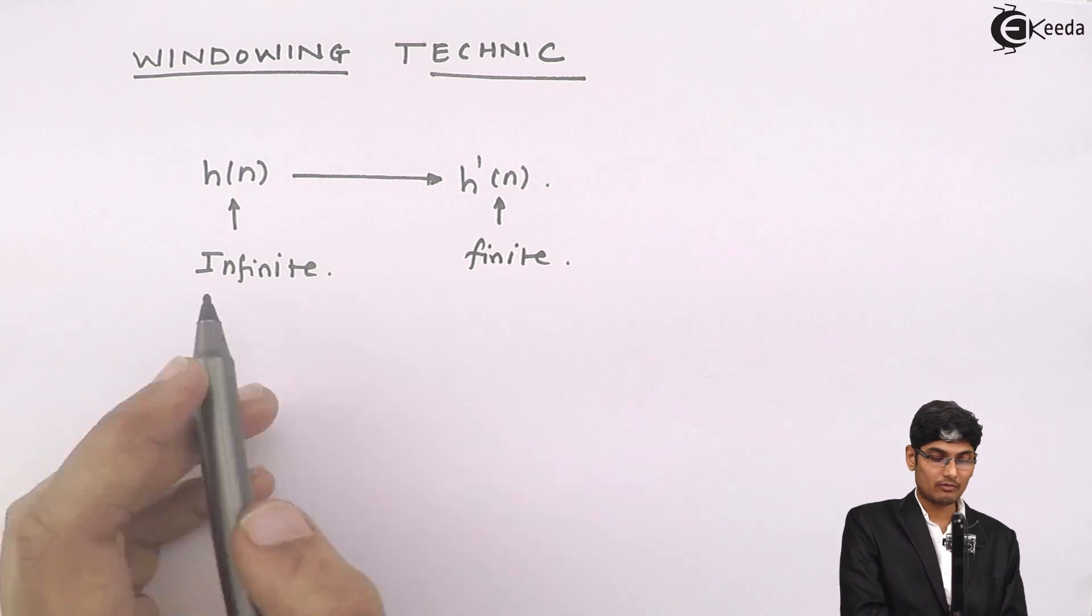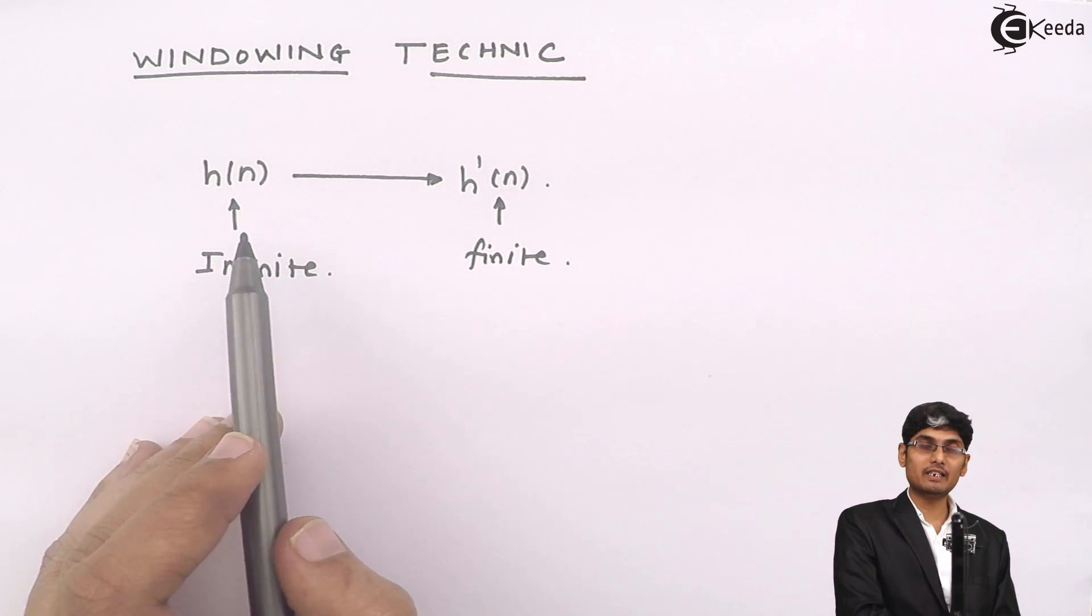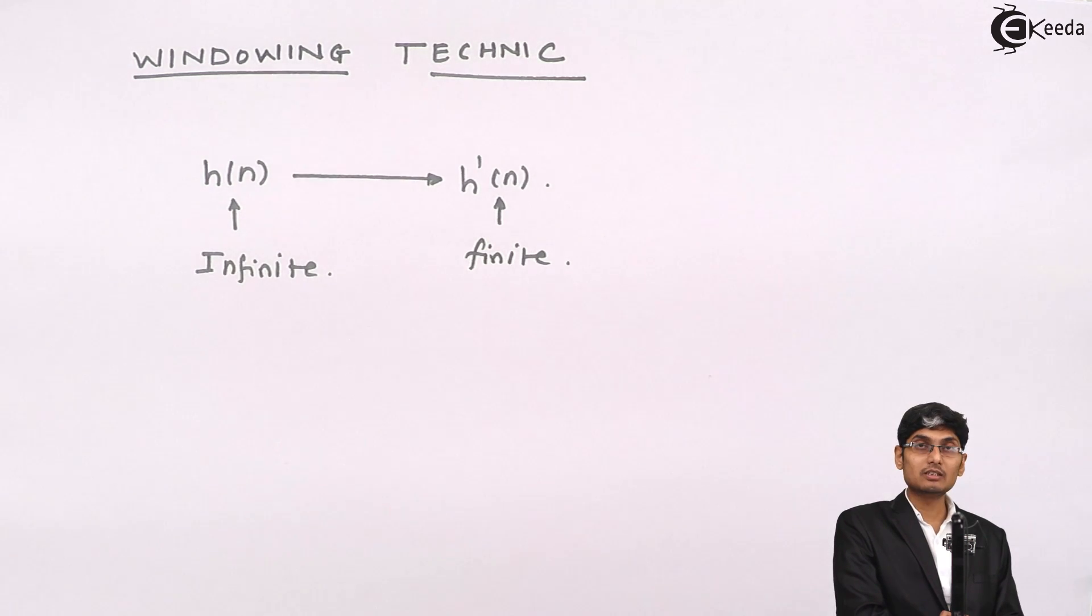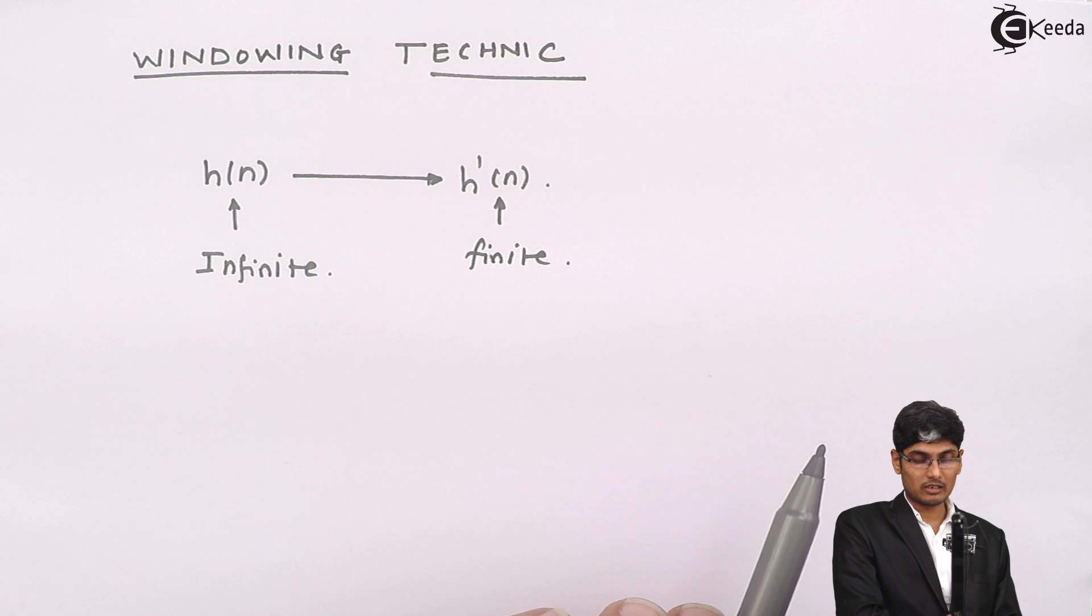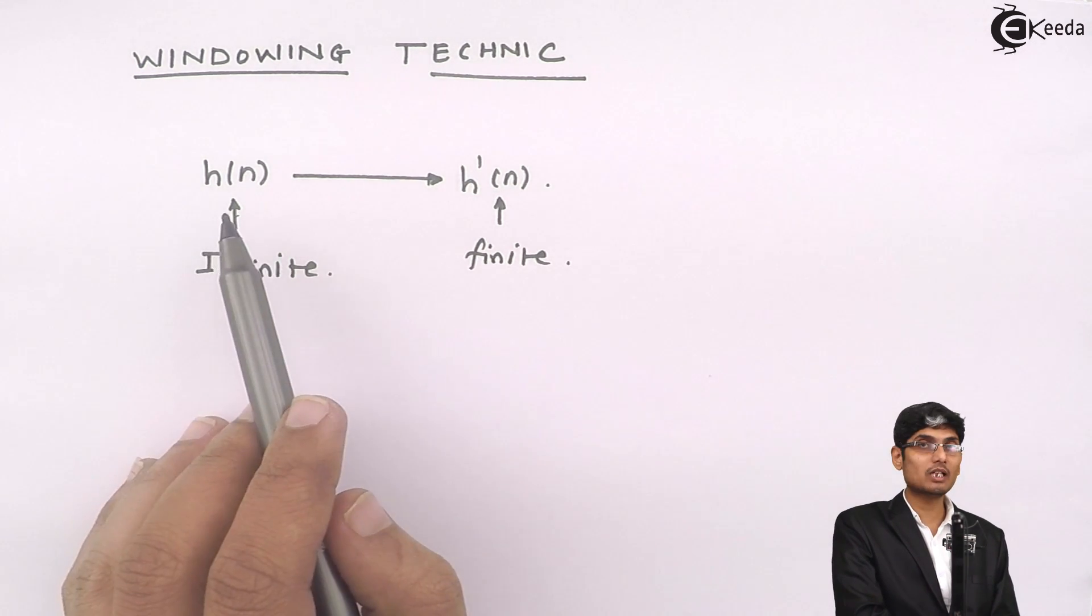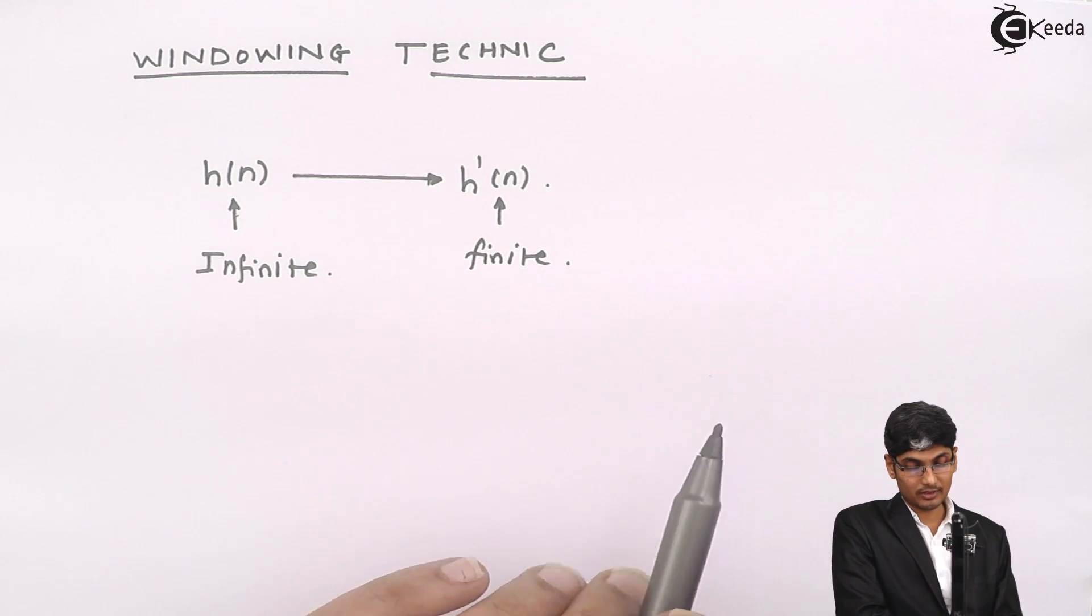What are we doing? We are taking input as infinite samples, applying this technique onto it and we will be getting a finite h dash of n, which will not be similar to that of h of n, which will be something else than h of n.